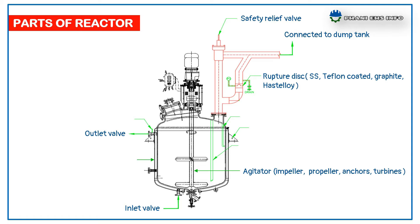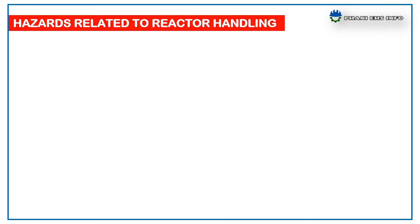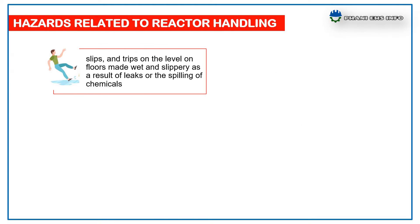Inlet and outlet valves are used for feeding solvents. A steam jacket or coil handles reaction temperature — heating, cooling, and chilling. Thermal relief valve is used for temperature control. Seal oil pot provides mechanical friction protection. J-dip or full dip is used for sampling purposes. Earthing sheet is provided for earthing purposes.